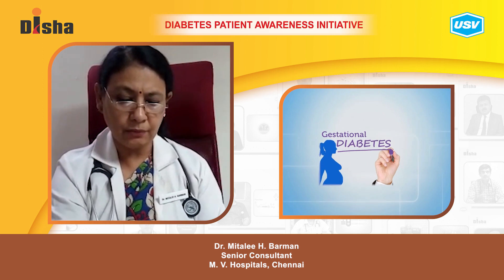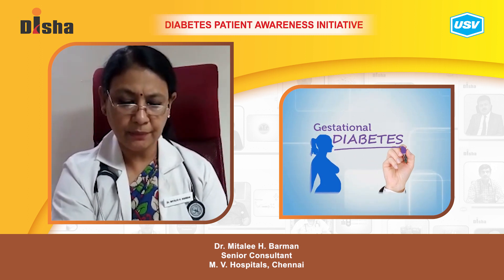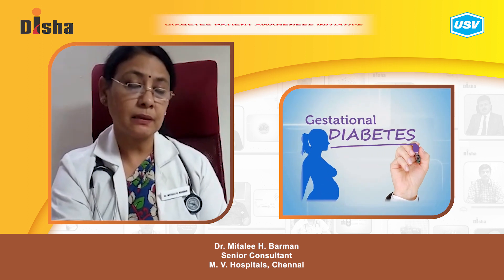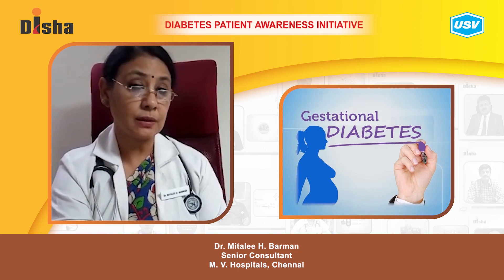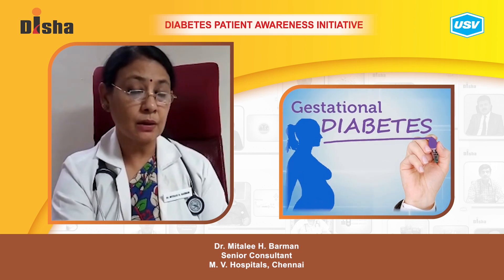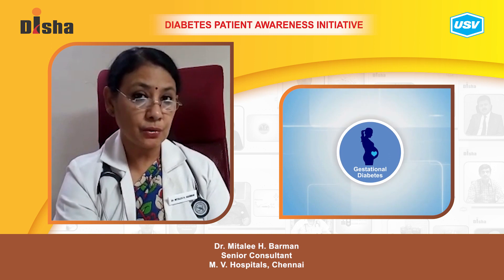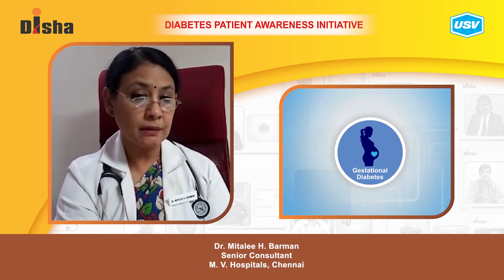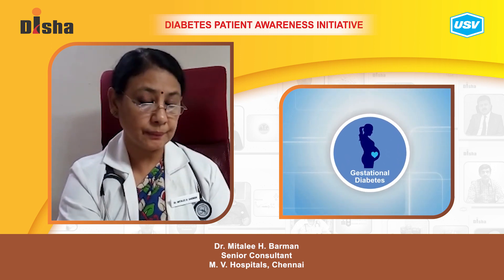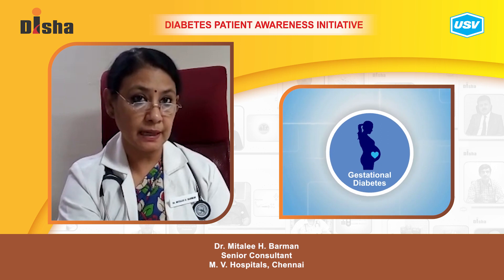Some women develop diabetes for the first time when they become pregnant. It's called gestational diabetes mellitus. The onset of diabetes which is seen during pregnancy is called gestational diabetes mellitus.